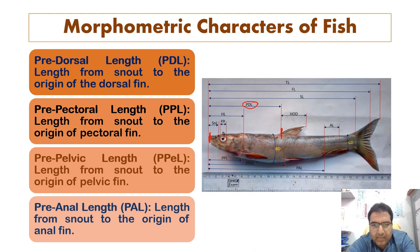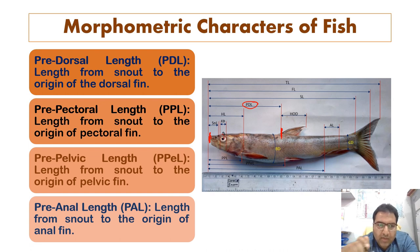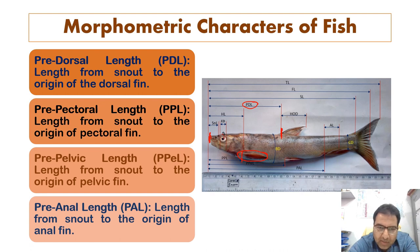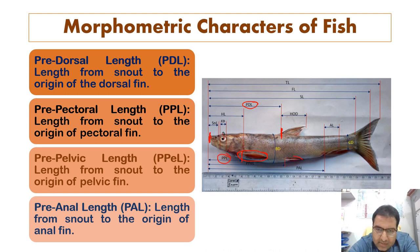We also have pre-pectoral length. It is the length from the snout to the origin of the pectoral fin. The pectoral fin is identified on the fish, and from the snout to its origin is measured as PPL — the pre-pectoral length.